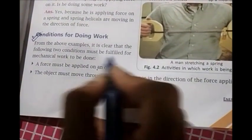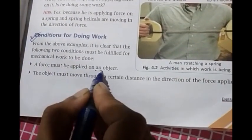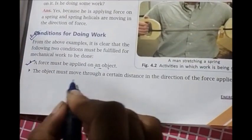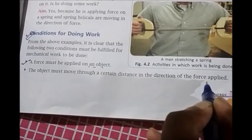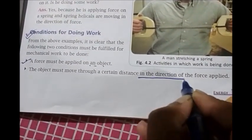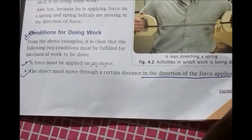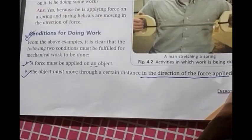Look at the book now. A force must be applied. So the two conditions that must be fulfilled are, a force must be applied on an object, the object must move through a certain distance in the direction of force applied. Now I would like to stress this. This phrase is very important. In the direction of force applied. So these are the two conditions for doing work.